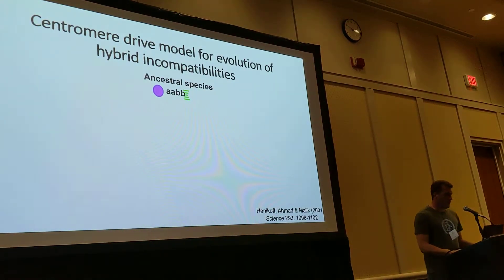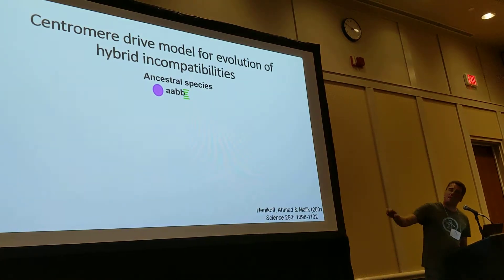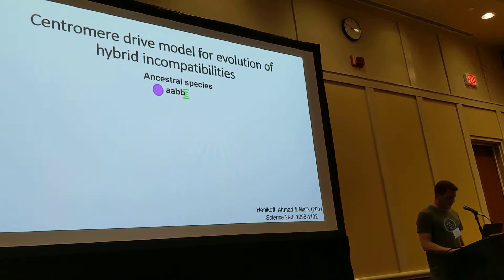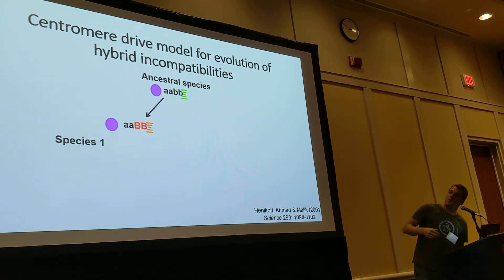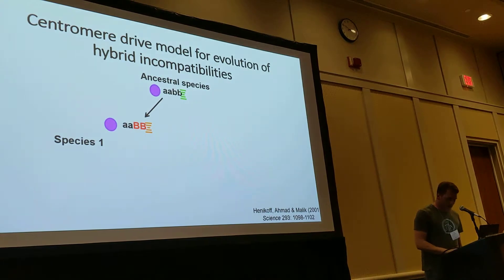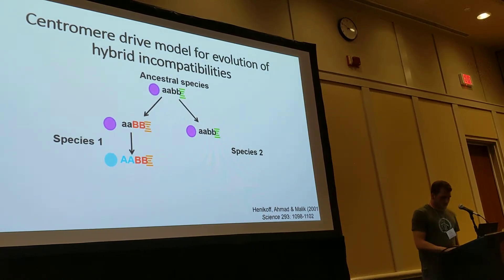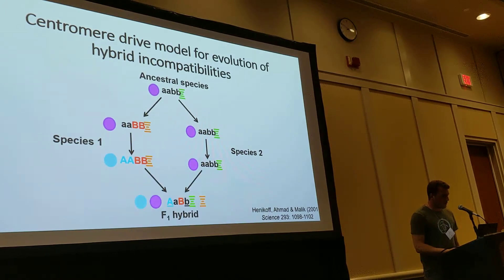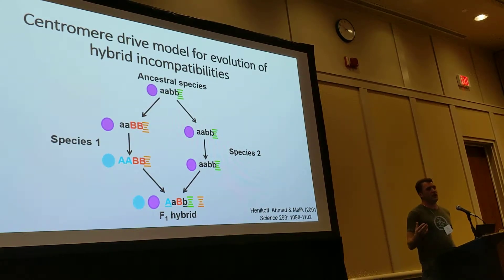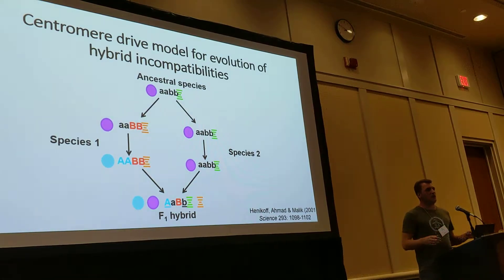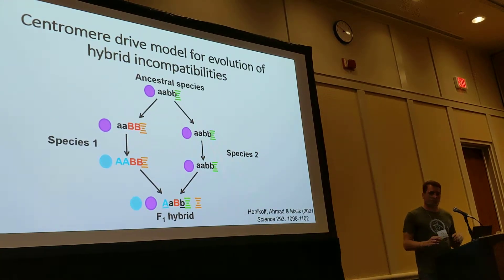This brings us to the Bateson-Dobzhansky-Muller model. You have an ancestral species with CENP-A and centromere sequence. In one lineage, you get drive — some new centromere sequence — and then a suppressor CENP-A evolving on that driving background. But in the other species, there's no drive. If you hybridize the two species back together, for the first time you bring that diverged CENP-A back into the other genetic background, and it no longer properly defines the centromere, causing things like aneuploidy or improper centromere identification in hybrid offspring, and this would really screw up mitosis and meiosis.